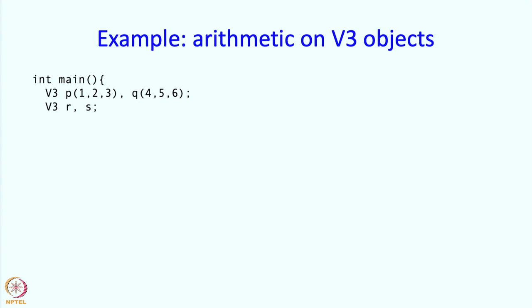Then we have a couple of uninitialized v3 objects. And now we can write r equals p plus q and the natural interpretation of this might be that we add the vectors component wise and we can make that natural interpretation hold in our implementation and that is exactly what we are going to see.